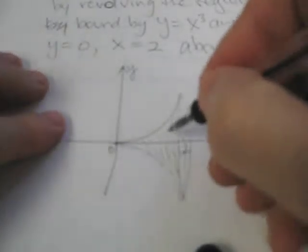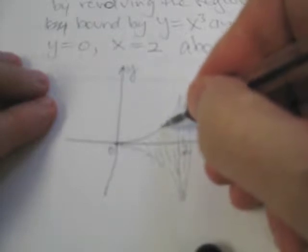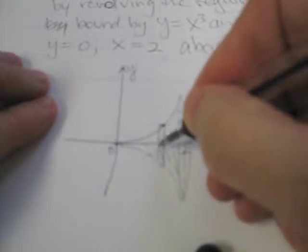Now, the whole purpose of this is to take a little disk, because we're talking about the disk method here, and we put a disk through here, which will be a width of dx.